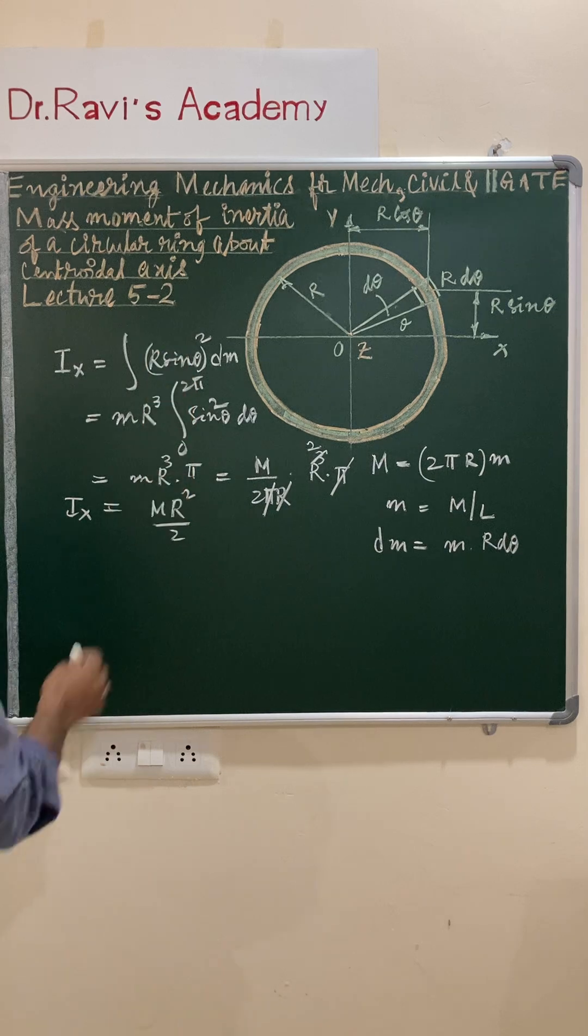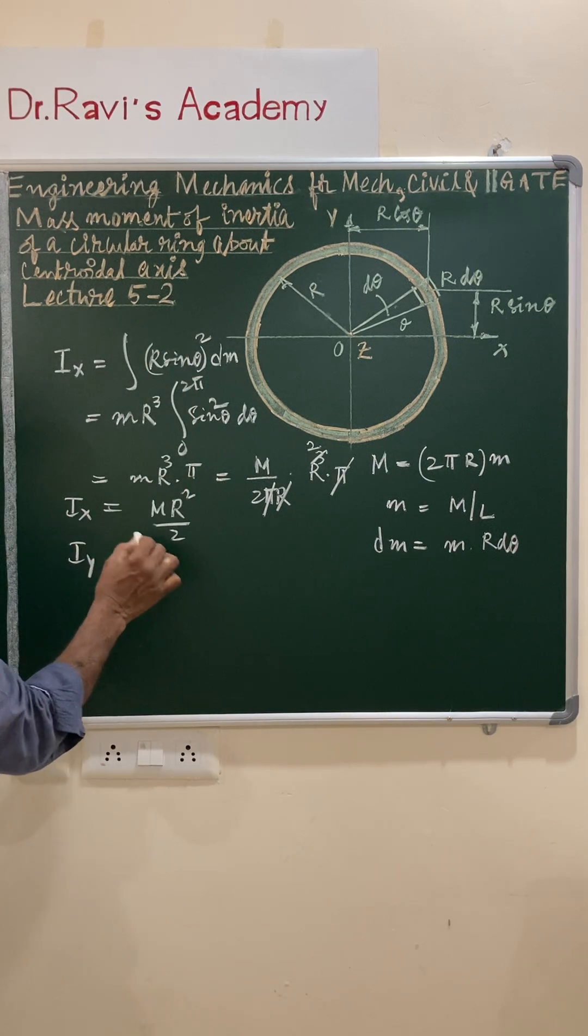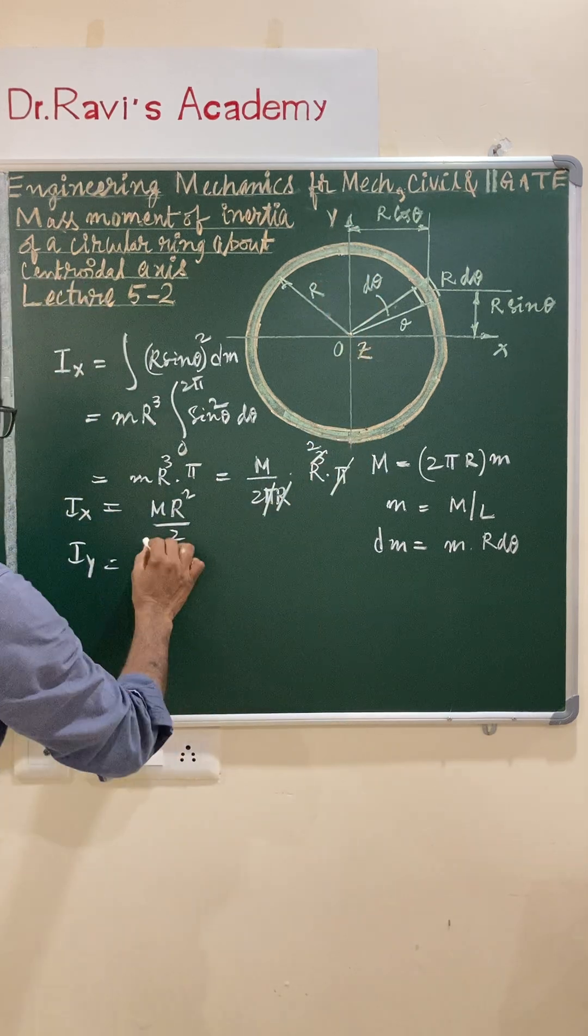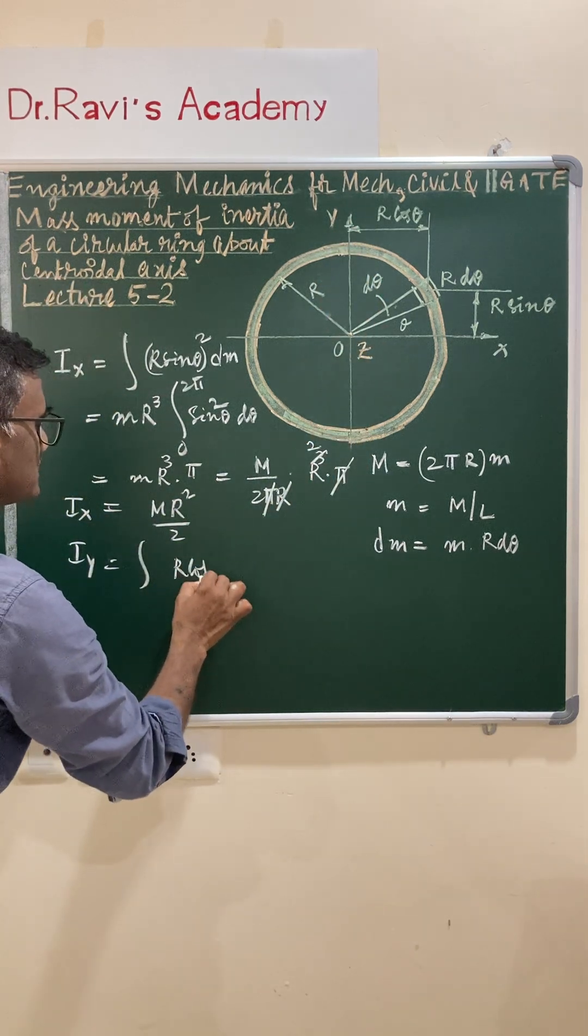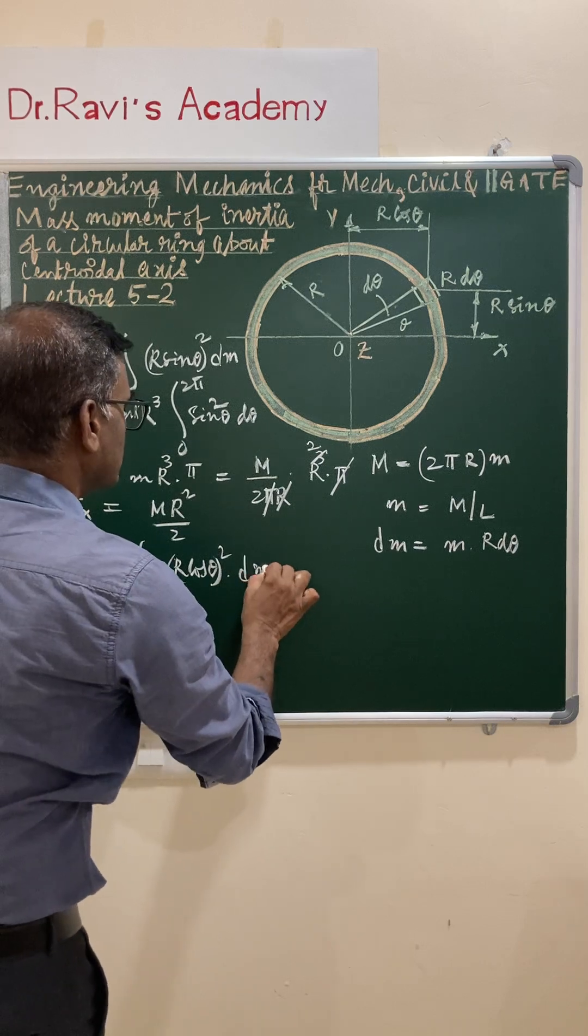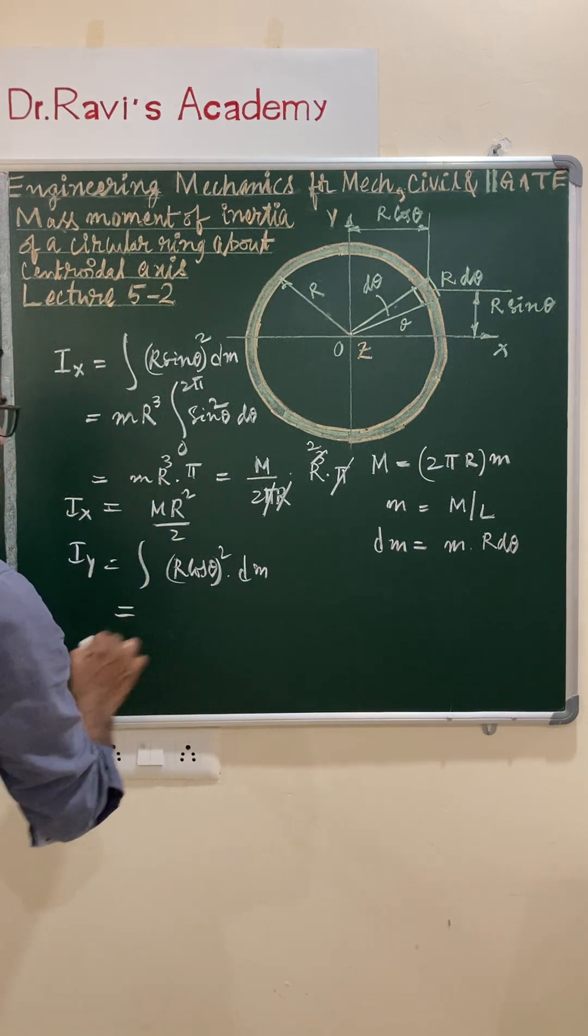Similarly, Iy value—Iy is equal to, in place of r sin theta, you have r cos theta. So integral r cos theta whole square into dm, and this value is r² dm.